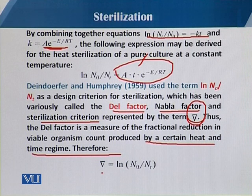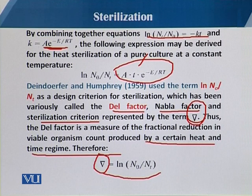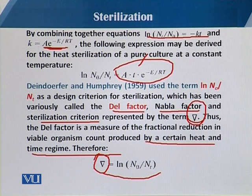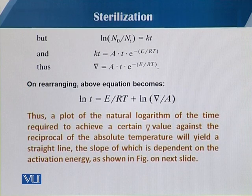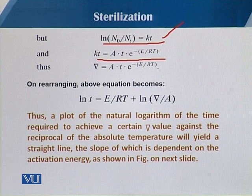The Del factor is equal to ln(N0/Nt). This basically shows the fractional reduction in viable organisms with respect to the heat and the time of heat treatment. With our combined equation, the Del factor equals A·t·e^(-E/RT).